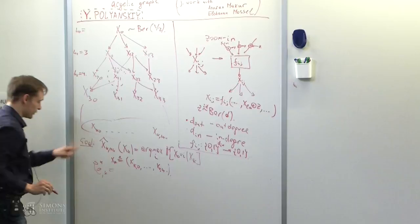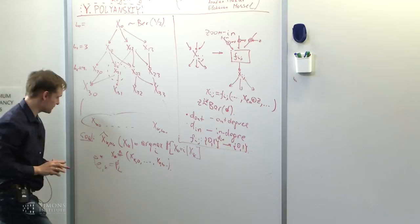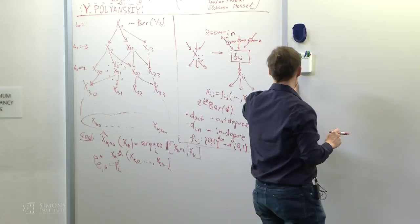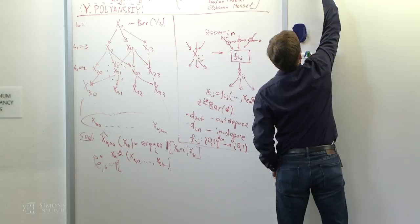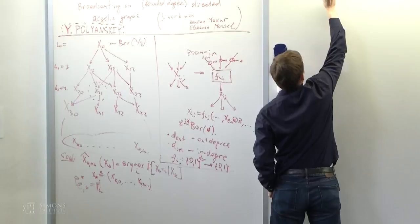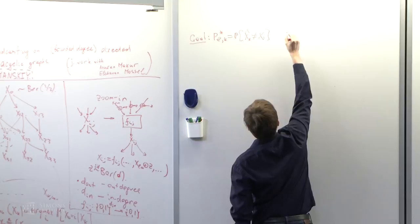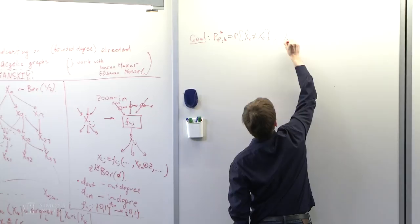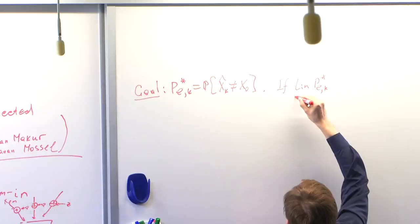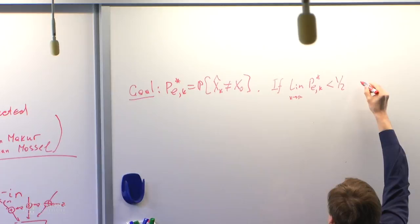What's the goal? The goal is to find the best estimator of the root bit. The optimal estimator is to compute the conditional expectation. We define probability of error Pe star from decoding at the Kth layer. If limit Pe star as K goes to infinity is less than one-half, then we say broadcasting is possible on this graph.